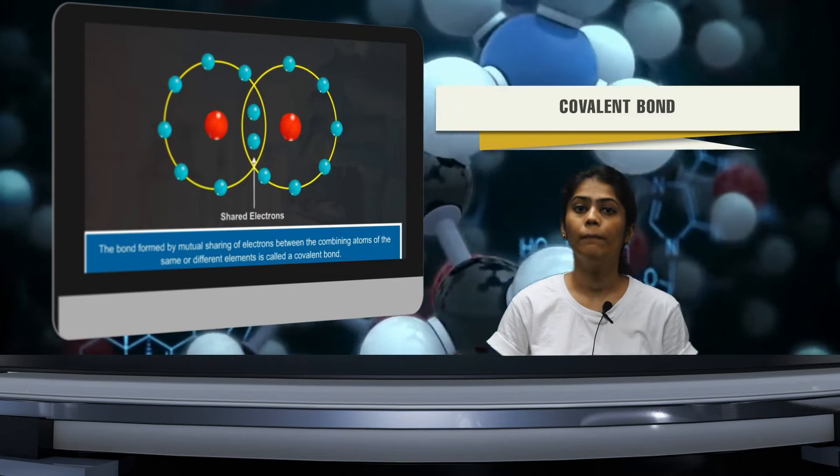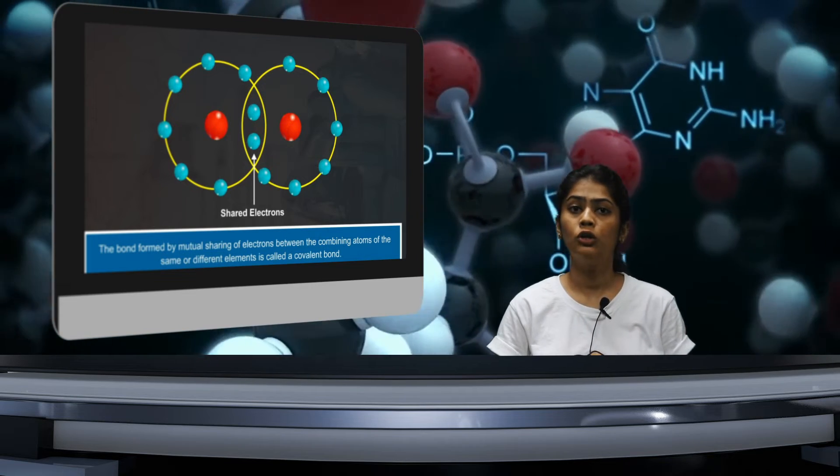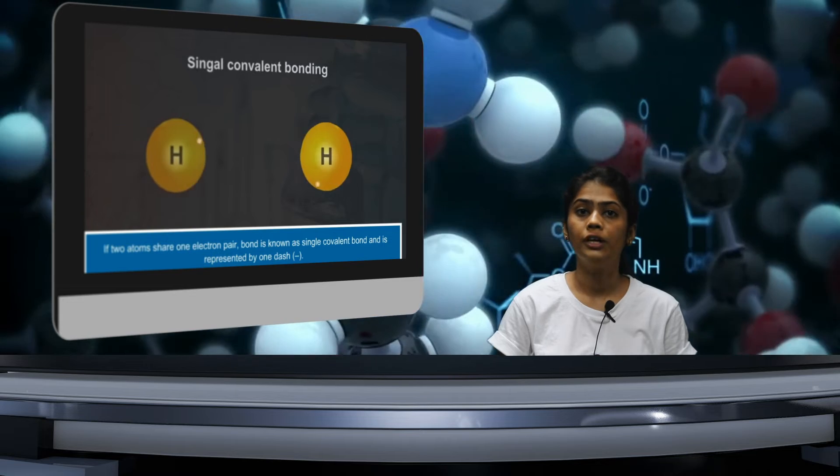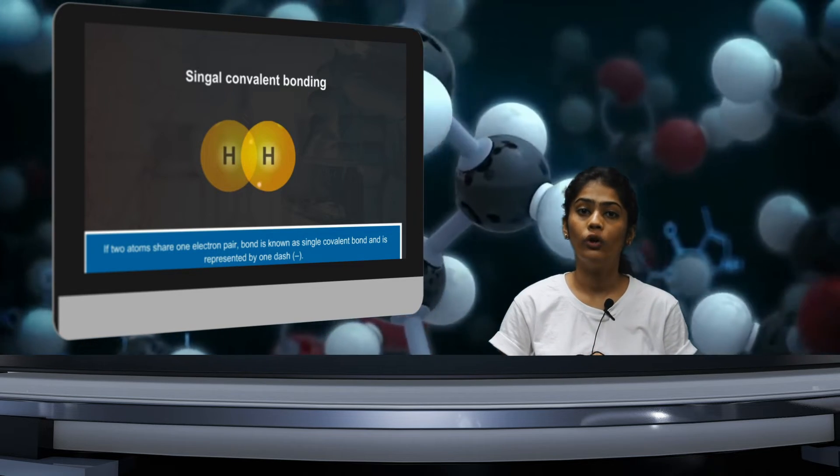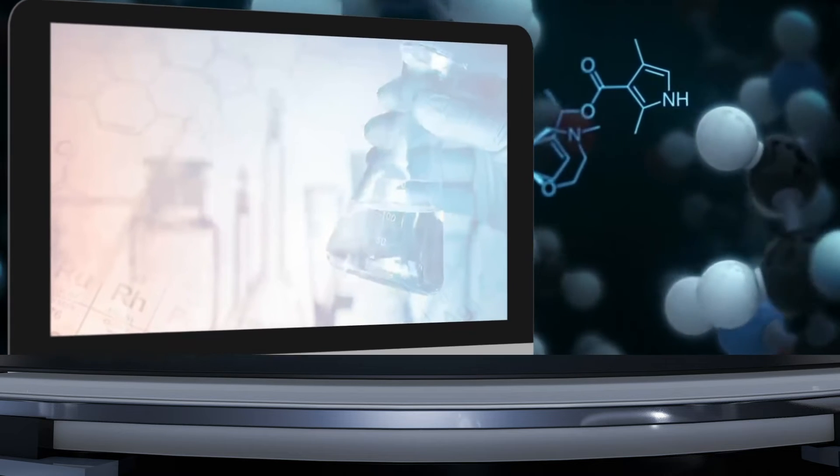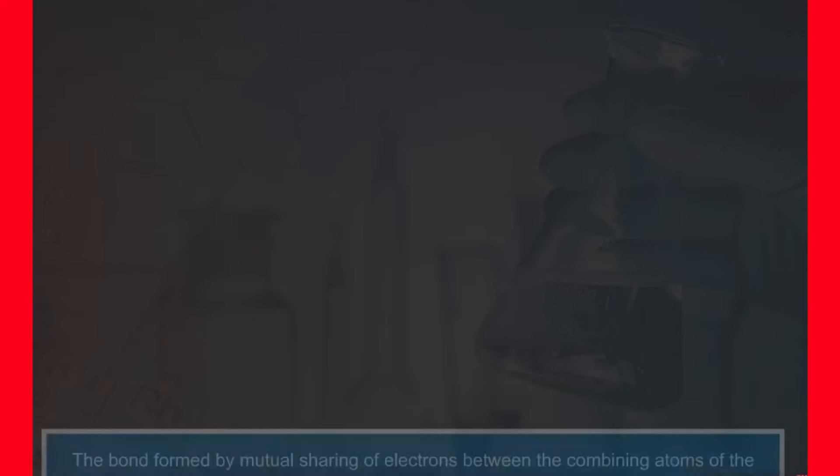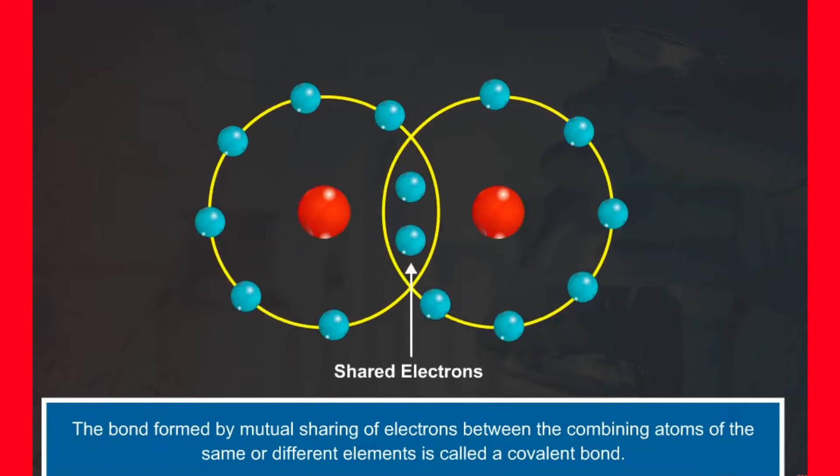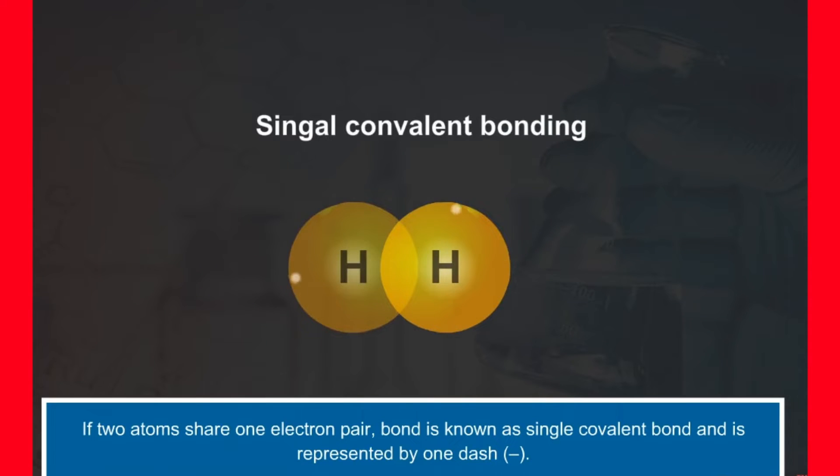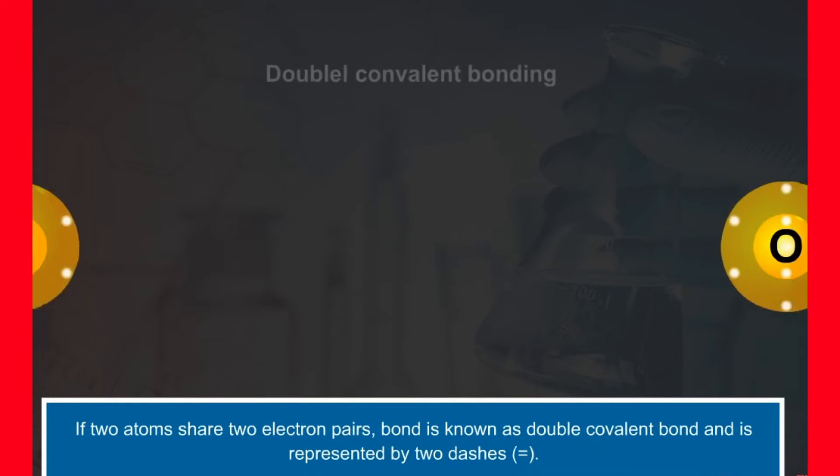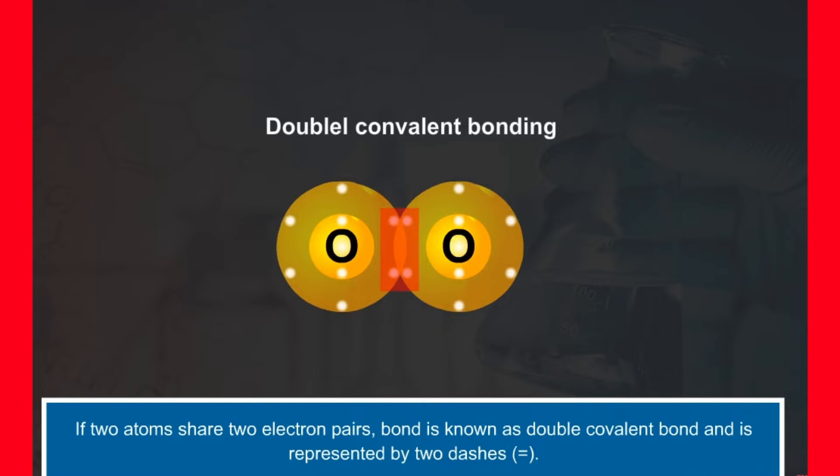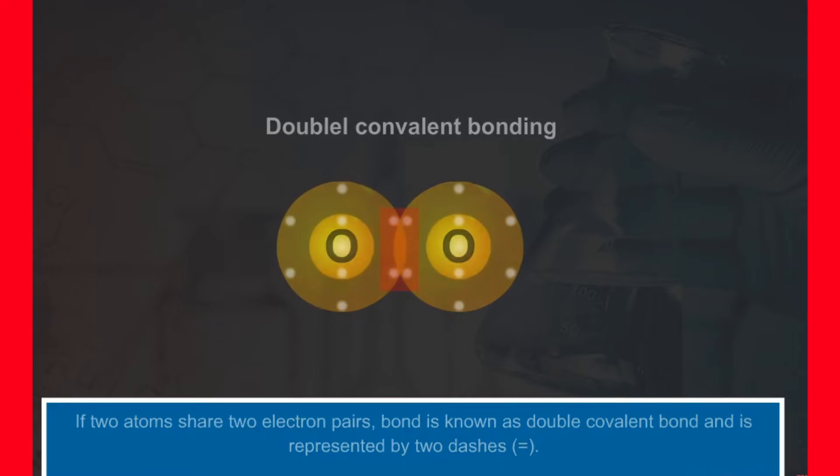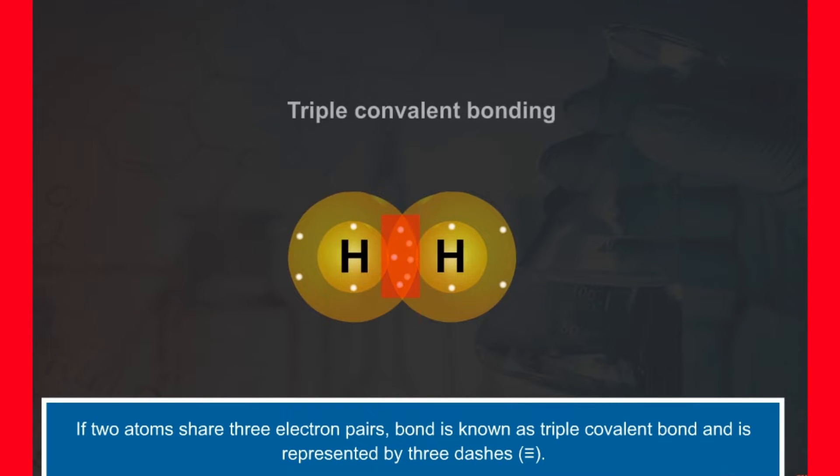We have studied about two important chemical bonding approaches. Now we will be looking at one of the very important topics, that is covalent bond. The bond which is responsible for holding many molecules together. Covalent bond: The bond formed by mutual sharing of electrons between the combining atoms of the same or different elements is called a covalent bond. If two atoms share one electron pair, bond is known as single covalent bond and is represented by one dash. If two atoms share two electron pairs, bond is known as double covalent bond and is represented by two dashes. If two atoms share three electron pairs, bond is known as triple covalent bond and is represented by three dashes.